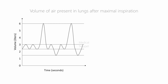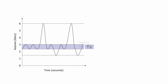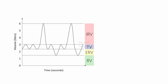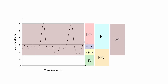In summary: the volume of air inspired during normal respiration is tidal volume; the maximum volume inspired after normal respiration is inspiratory reserve volume; the volume remaining after maximal expiration is residual volume; the volume remaining after normal expiration is functional residual capacity; the maximum volume expired after maximal inspiration is vital capacity; and the total lung capacity is the volume of air in the lungs after maximal inspiration.